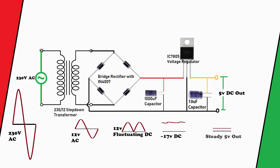Now we will be applying that filtered DC voltage across the input and ground terminal of the 7805 voltage regulator. After passing through the 7805 voltage regulator the 5 volt DC output will be available. And to stabilize the 5 volt DC output we have used a 10 microfarad capacitor.